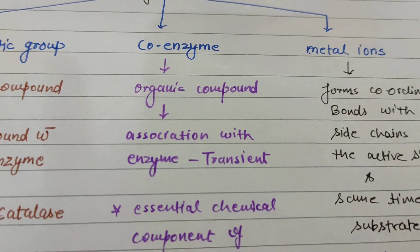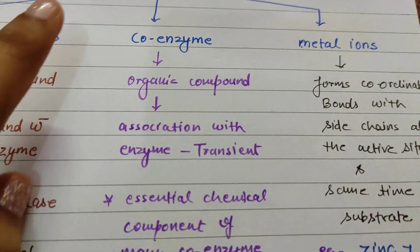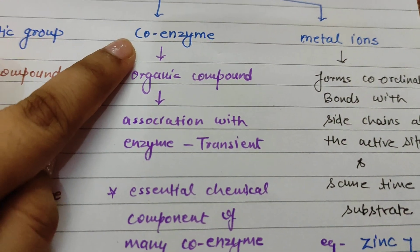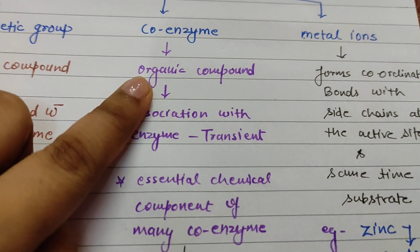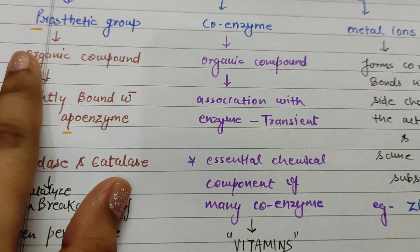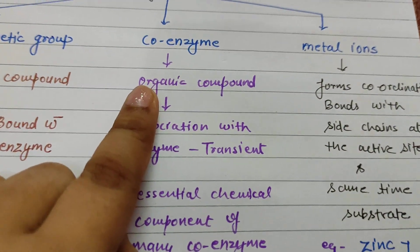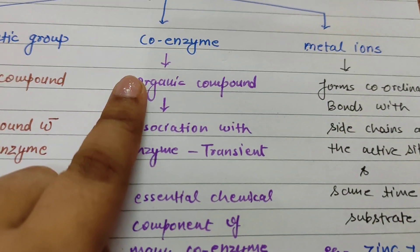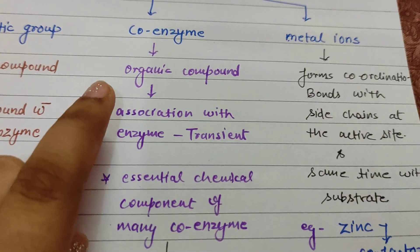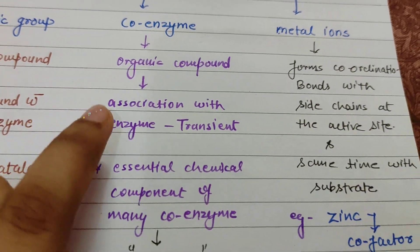Now, second we will talk about Coenzyme. Coenzyme is also an organic compound, just like the Prosthetic group. The coenzyme has an association with the enzyme.